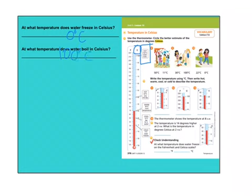What I'd like you to do is use the thermometer and circle the better estimate of the temperature in degrees. You're going to work through this page while only looking at the Celsius side of the thermometer. When you're finished, you can check your answers in Schoology.